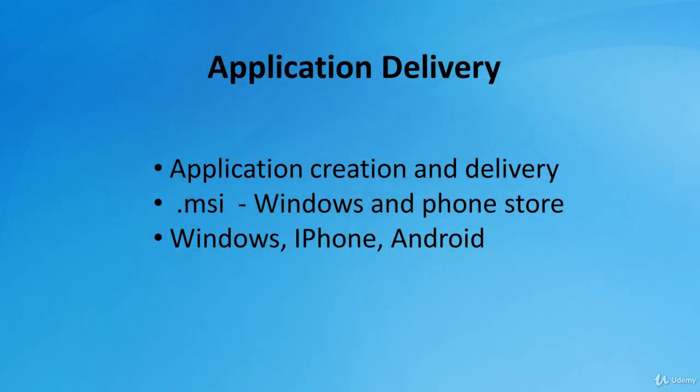Application Delivery allows administrators to create one application that can be delivered to all user devices. Think of an application like a box — this box contains one or more sets of installation files for a software package, known as a deployment type. A deployment type also contains rules that specify when and how the software is deployed. For example, the deployment type can be an MSI installer package, an app package for a mobile device from the App Store, or an app package for an Android device, which you can deploy to devices or device collections.